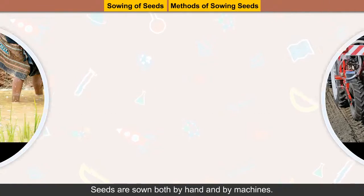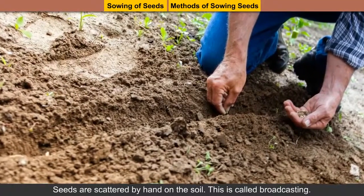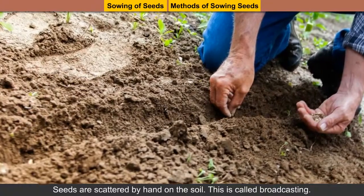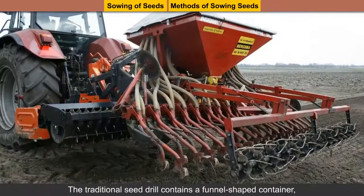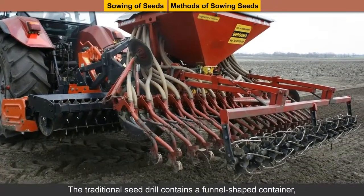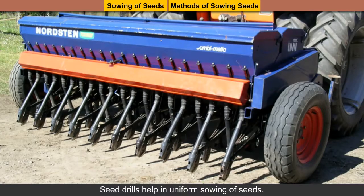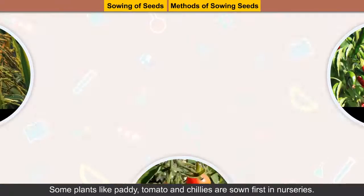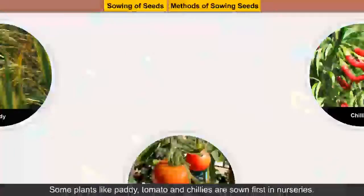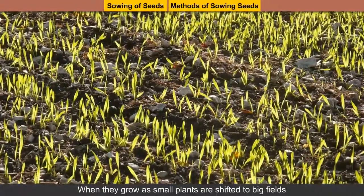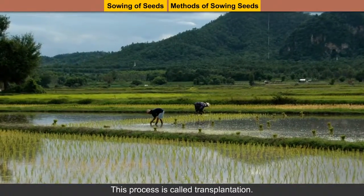Methods of sowing seeds: Seeds are sown both by hand and by machines. Seeds scattered by hand on the soil is called broadcasting. Seeds can also be sown by seed drills at right distances. The traditional seed drill contains a funnel-shaped container from where the seeds pass and get placed into the soil. Seed drills help in uniform sowing of seeds. Some plants like paddy, tomato and chilies are sown in nurseries. When they grow as small plants, they are shifted to big fields for further growth with adequate spacing. This process is called transplantation.